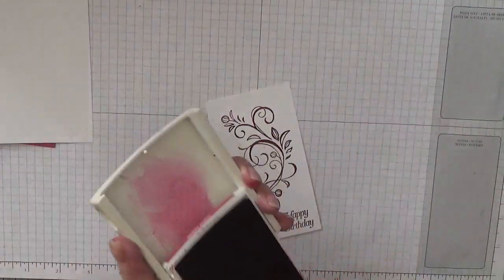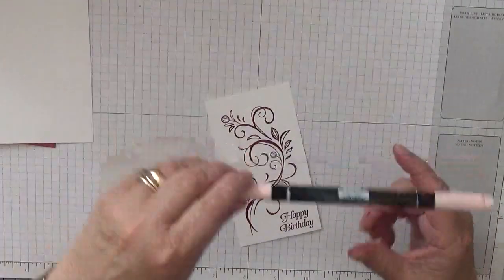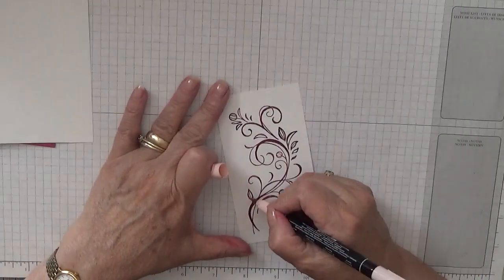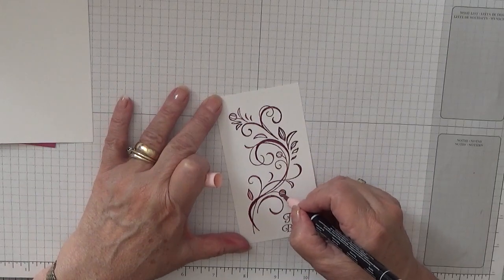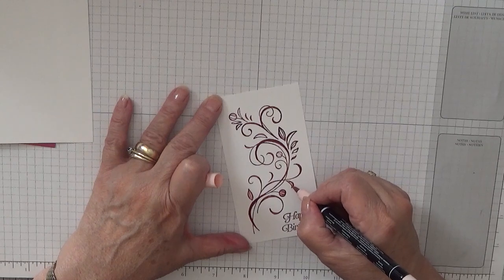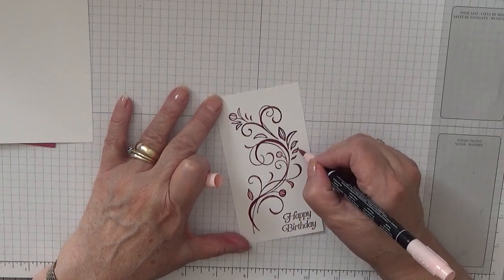All right. I've got my Blushing Bride marker pen and all I'm doing is just coloring the buds and the leaves in Blushing Bride.